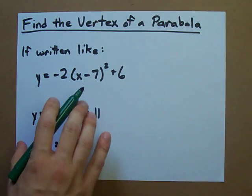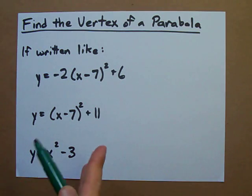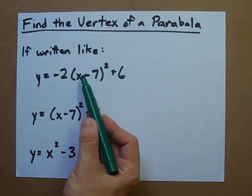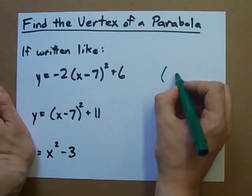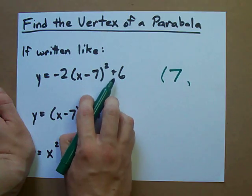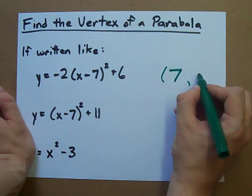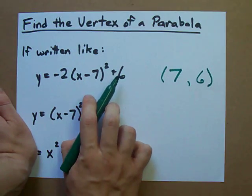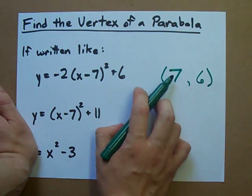You can read the vertex directly off of functions that are written this way by taking this number and flipping the sign. In this case, it turns out to be 7. And then just taking this number, in which case it happens to be positive 6. The vertex of this parabola is positive 7, positive 6. The coordinates, 7, 6.